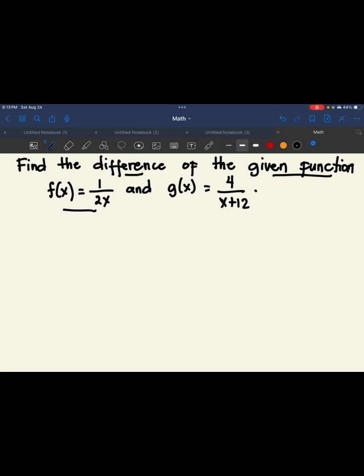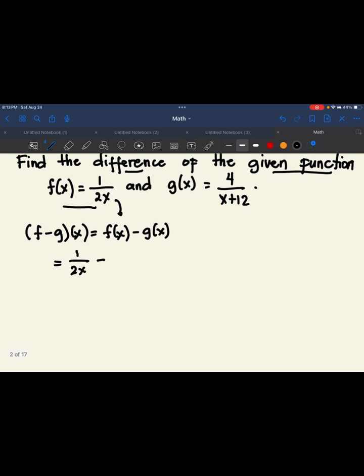So substitute the value of f of x that is 1 over 2x, subtract g of x which is 4 over x plus 12. Next,